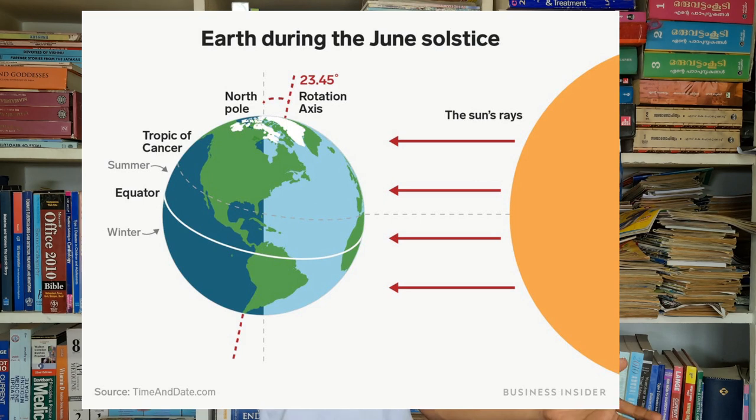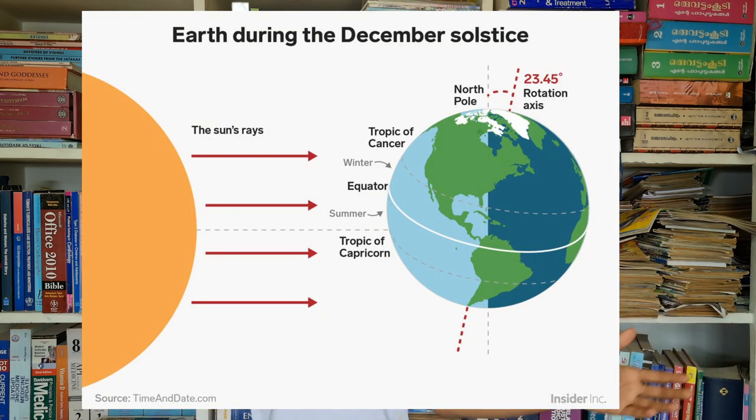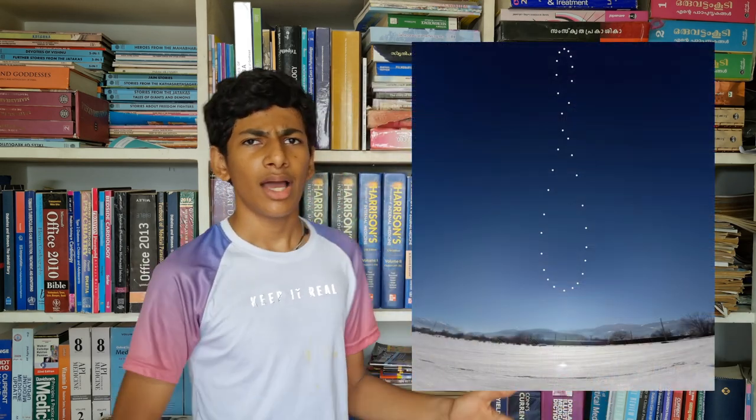The earth tilts on its axis while revolving around the sun. During the month of June, the northern hemisphere will be tilted towards the sun, while during the month of December, the southern hemisphere will be tilted towards the sun. Due to this tilt, an observer from the earth will feel as if the sun is moving up and down throughout the year. This up and down motion of the sun causes the vertical component of the sun's movement in an analemma.